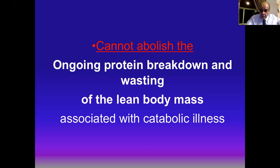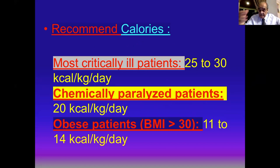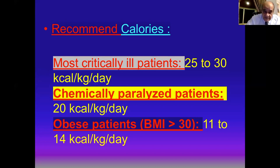For recommended calories in ICU critically ill patients: first and second week — 25–30 kcal/kg/day for patients at rest and paralyzed; 20 kcal/kg/day for non-paralyzed patients. For obese patients with BMI over 30, give 11–14 kcal/kg/day from actual body weight, but increase protein accordingly.